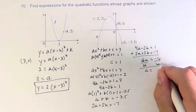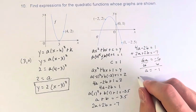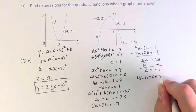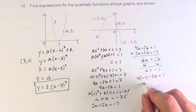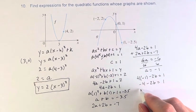So dividing by 6, a is equal to negative 6 divided by 6, which is negative 1. Now we can solve for b because we know a. So 4 times negative 1 minus 2b equals 1. 4 times negative 1 is negative 4 minus 2b equals 1. Adding 4 to both sides.